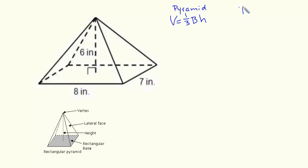This formula is pretty similar to the volume of a prism. The only difference is we have to multiply our area of the base times the height by one-third.